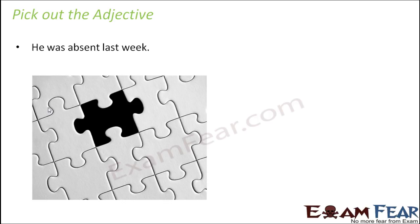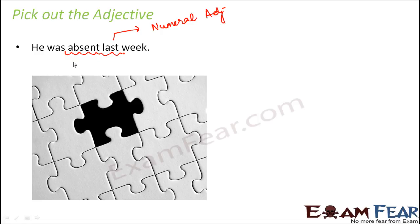Let's look at the next example: He was absent last week. This sentence has two adjectives. 'Last' answers the question of which week or how many weeks before he was absent, so it is talking about a number — making 'last' a definite numeral adjective, an adjective of number. As for 'absent,' it describes the pronoun 'he,' so 'absent' here is a descriptive adjective.